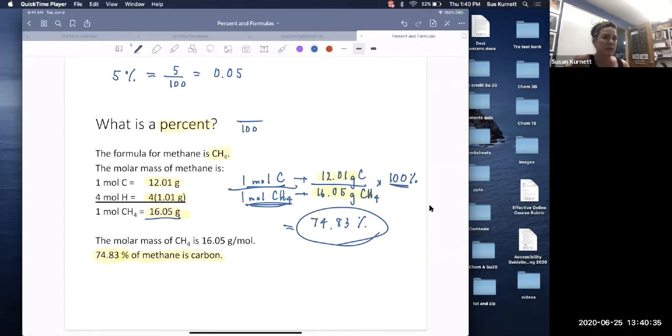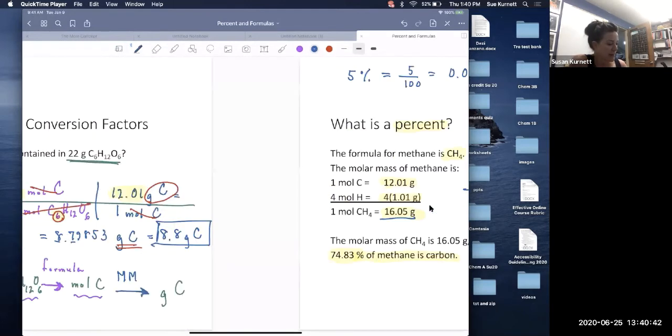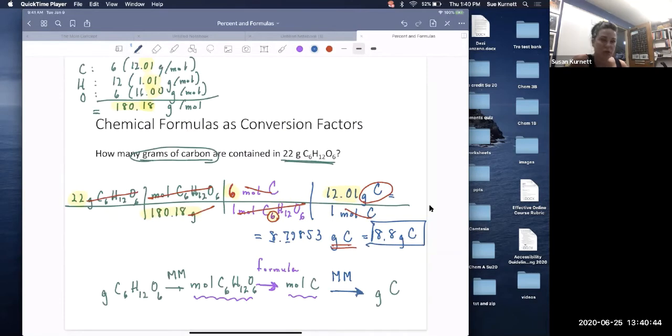So we're using that idea of the ratio of one thing to everything times a hundred percent. There's two ways of using percents. One is to find a percent and the other is to start with a percent. And we'll see both of those in the class. So I want to go back to this problem here and just do it a different way.